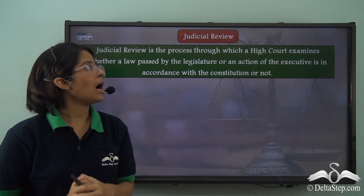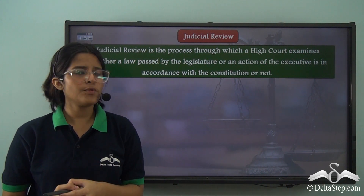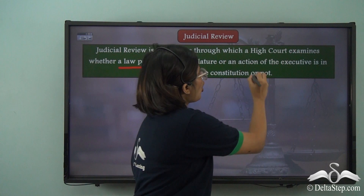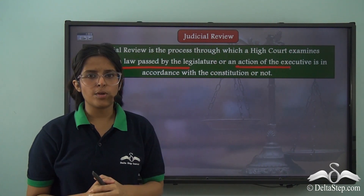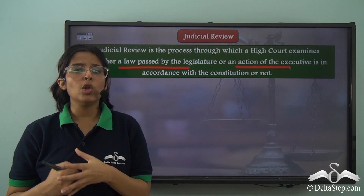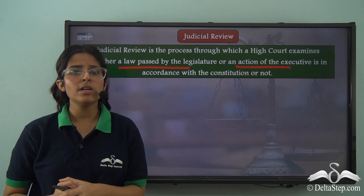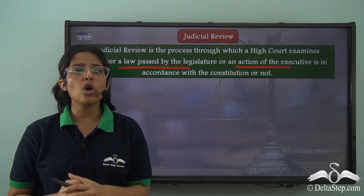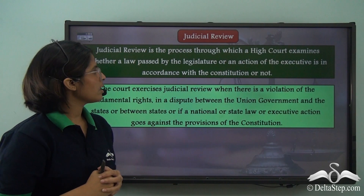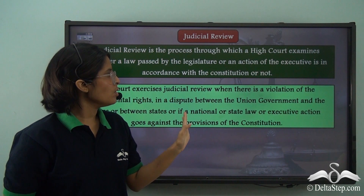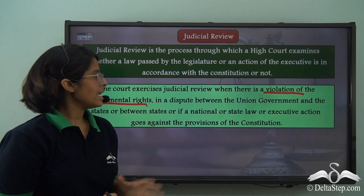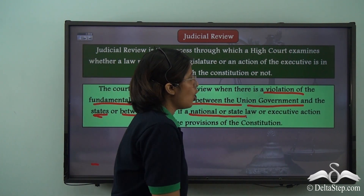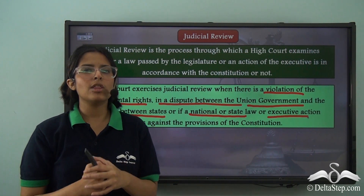The High Courts also have the power of judicial review. What is judicial review? Judicial review is the process through which a High Court examines whether a law passed by the legislature or an action of the executive is in accordance with the Constitution. The High Court checks whether a law passed by the legislature or an action taken by the executive matches the provisions of the Constitution. The court exercises judicial review when there is a violation of fundamental rights, a dispute between the union government and states, or if a national or state law or executive action goes against the provisions of the Constitution.